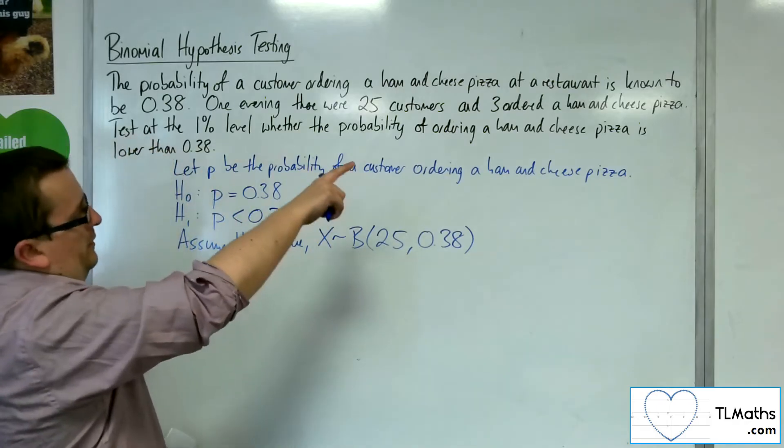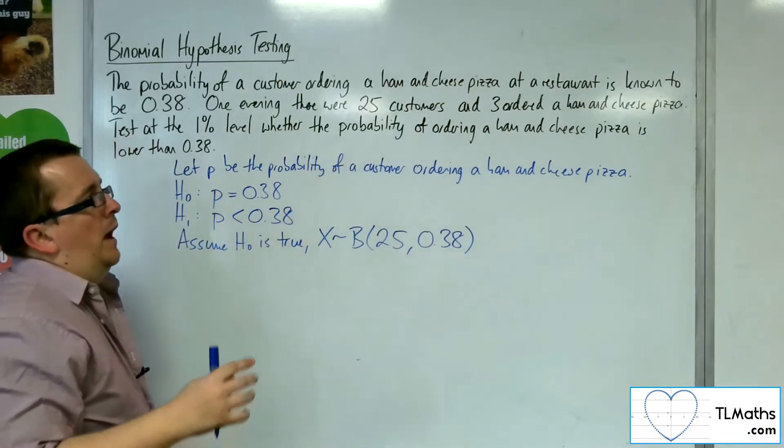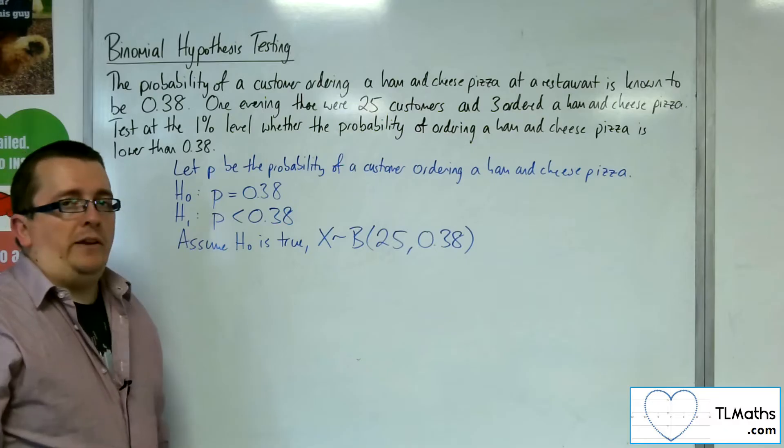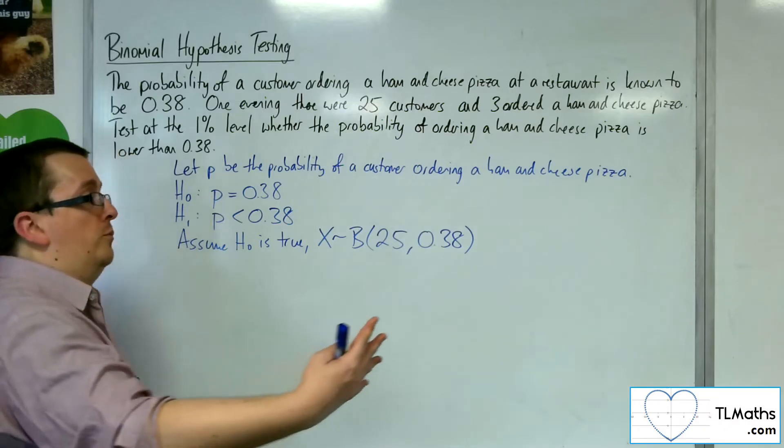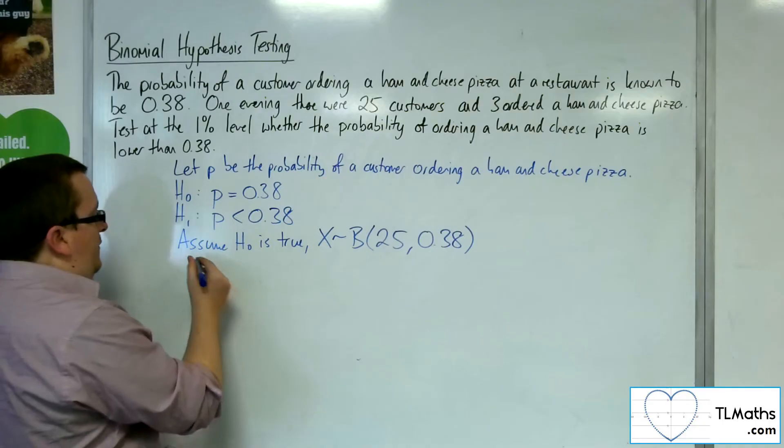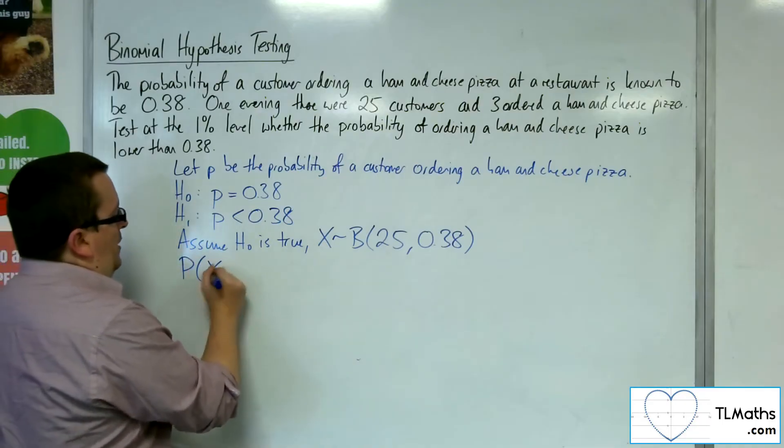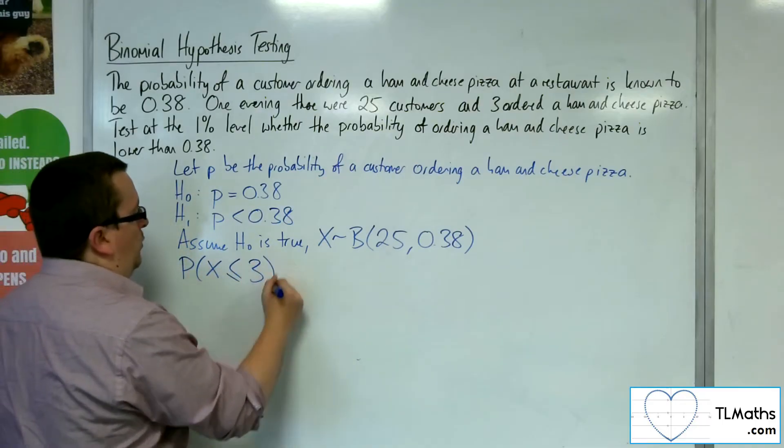So what we observed was 3. So 3 ordered a ham and cheese pizza. So we want to determine whether 3 or fewer is significant, so we look for X is less than or equal to 3.